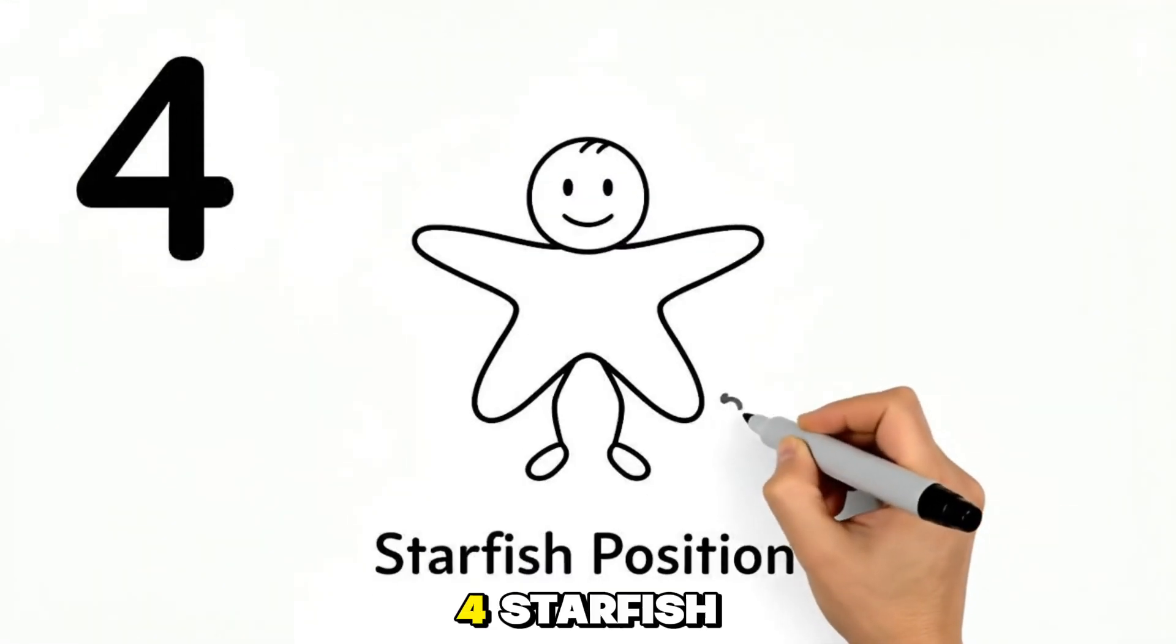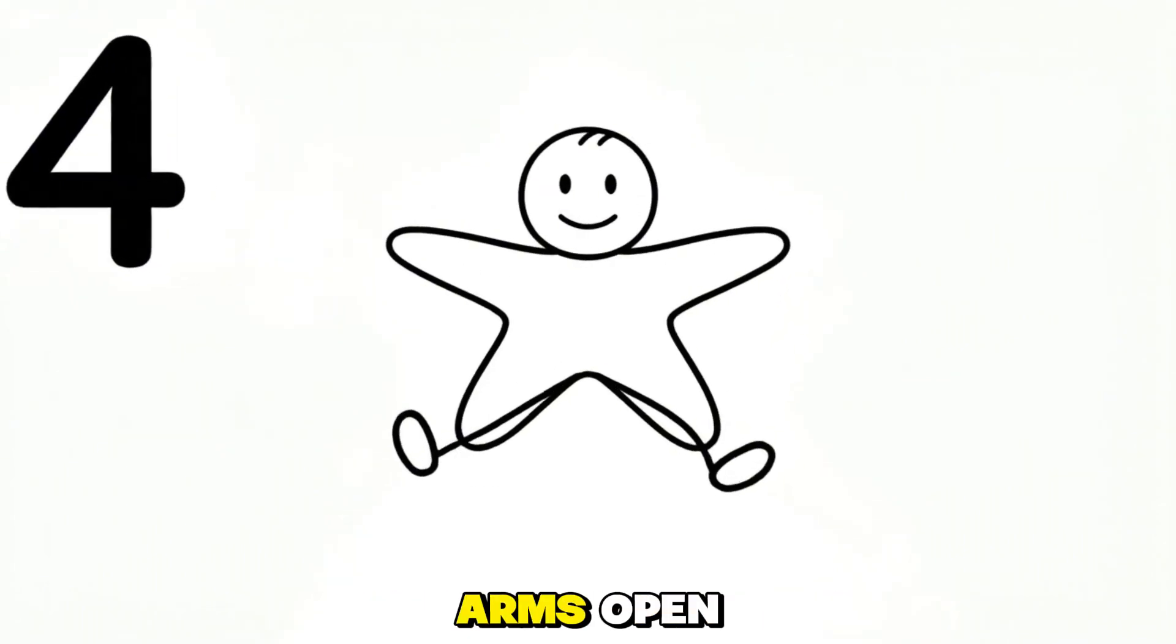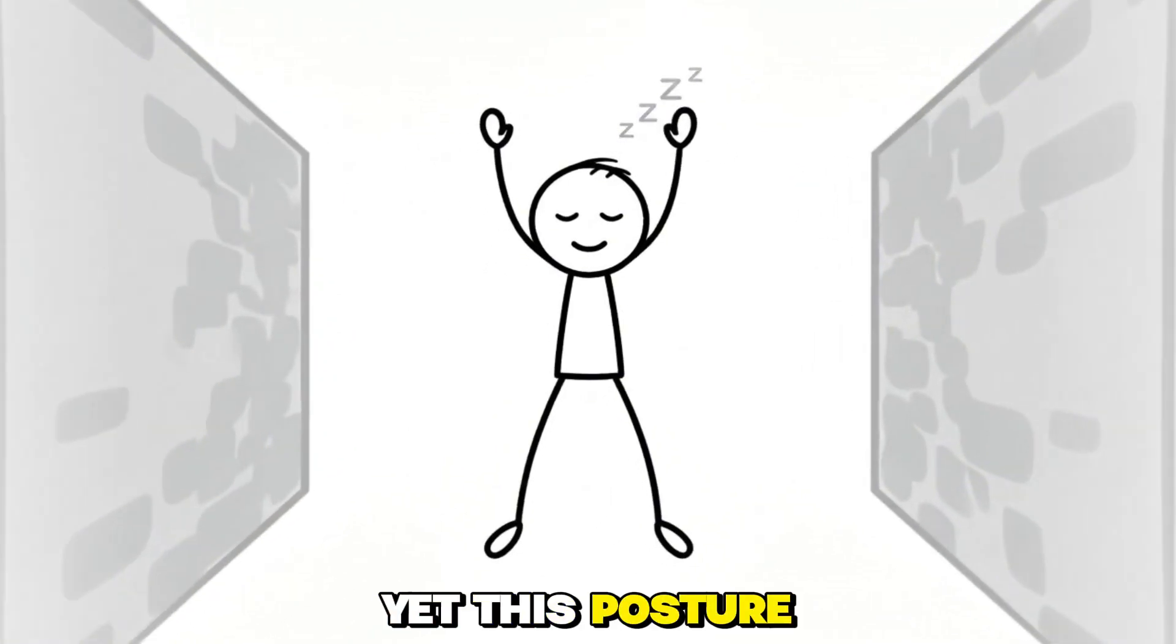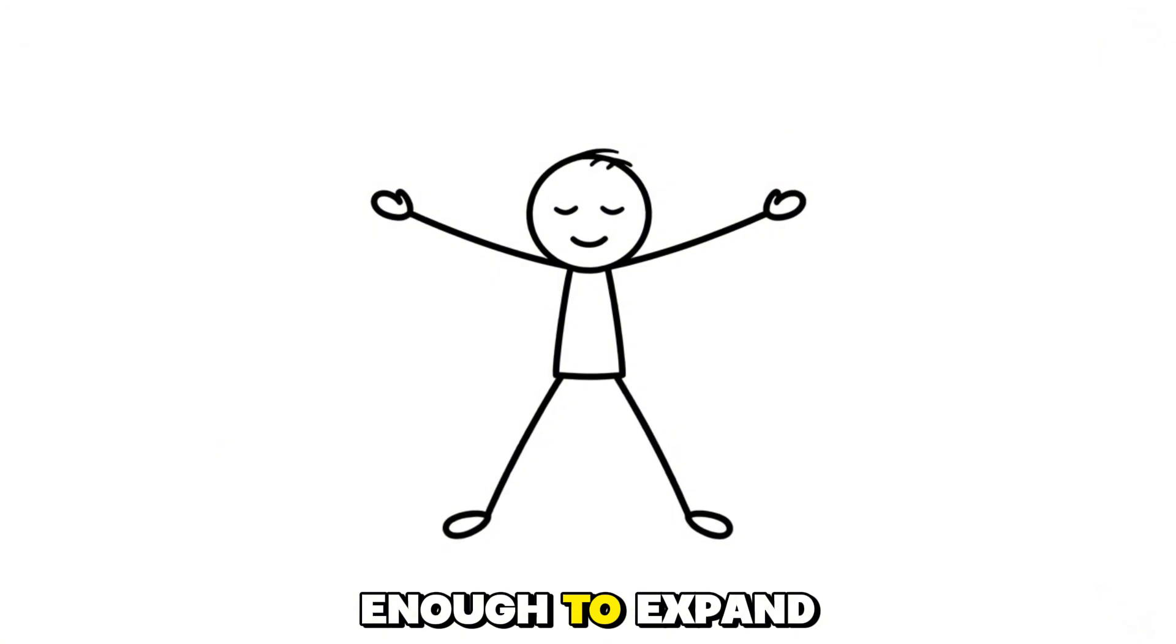Starfish, the open system. The starfish position looks dramatic with arms open, legs open, and chest exposed. Yet this posture often signals a nervous system that finally feels safe enough to expand.